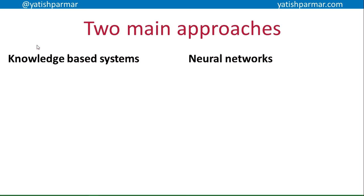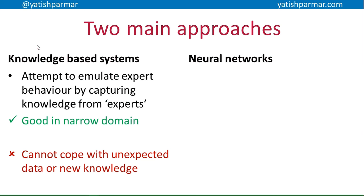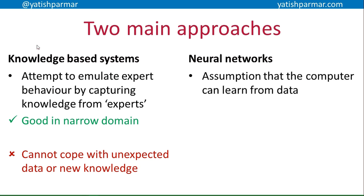The two main approaches we talked about were knowledge-based systems, which attempt to emulate expert behaviour and capture knowledge from experts. The great advantage is they are very good in a narrow domain because they have good factual knowledge. The knowledge engineer may have captured the tricks an expert uses to solve a problem. However, these knowledge-based systems cannot cope with unexpected data or new knowledge.